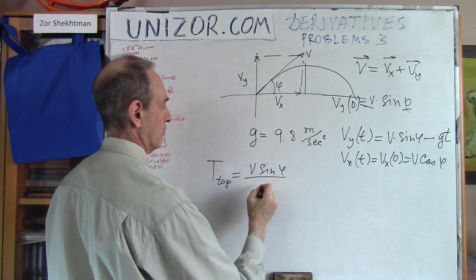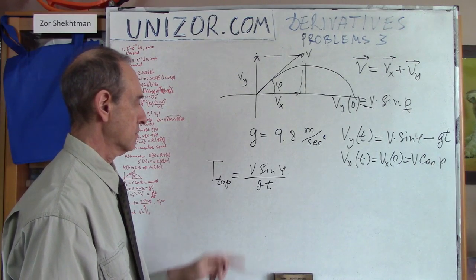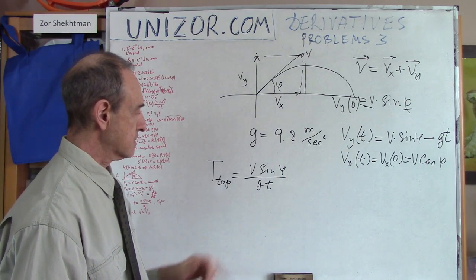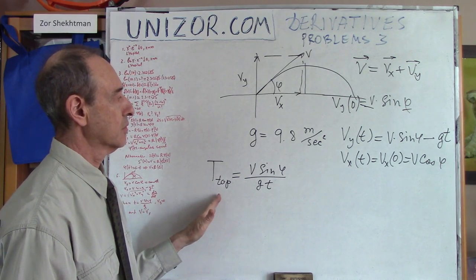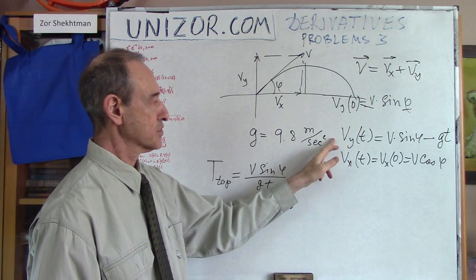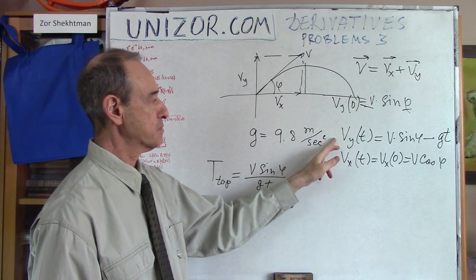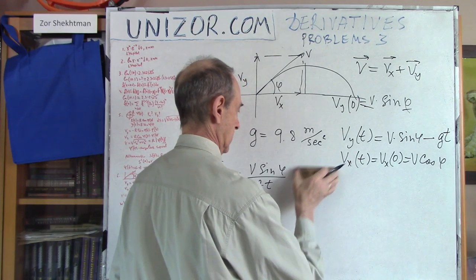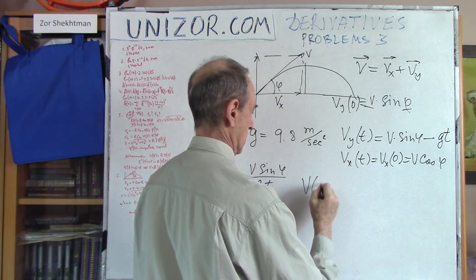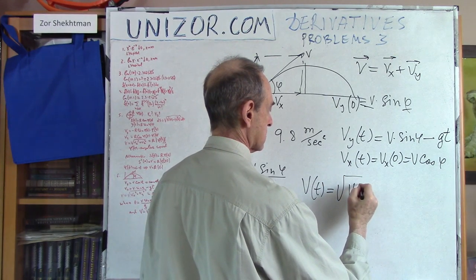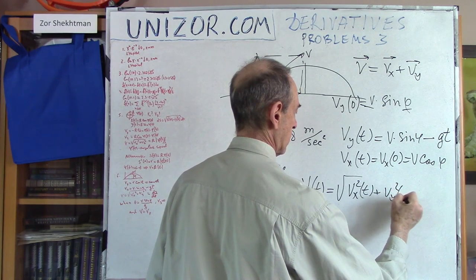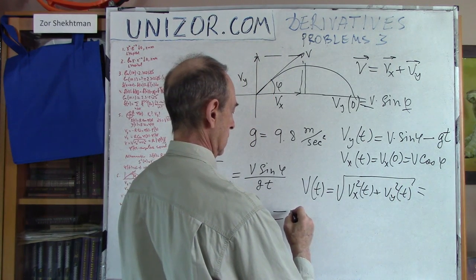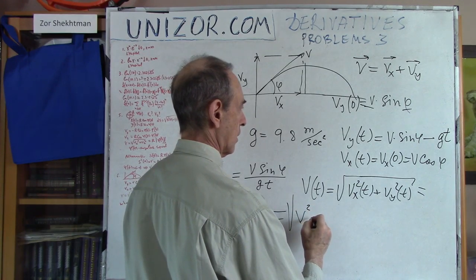As time goes on, speed reduces by g each second, so vy(t) = v·sin(φ) − g·t. The horizontal component is always vx = v·cos(φ). These are the two components up to the moment when the projectile reaches the top. The time to reach the top — when vy = 0 — is t_top = v·sin(φ)/g.